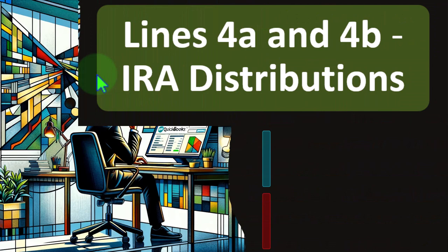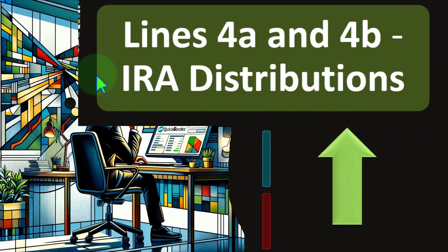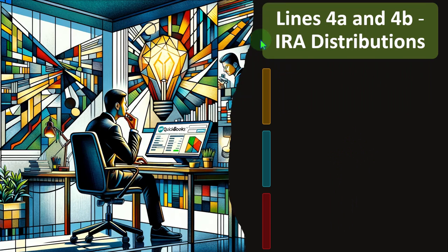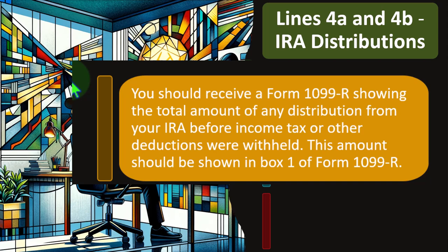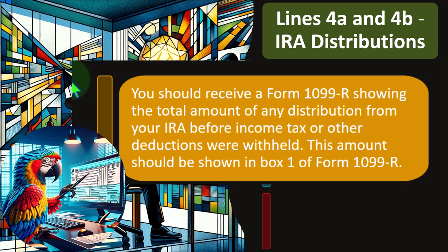So let's look at lines 4A and 4B — IRA distributions, not contributions. We're not talking about putting money into the IRA; we're talking about taking money out, which typically happens at retirement. You should receive a Form 1099-R showing the total amount of any distribution from your IRA before income tax or other deductions were withheld. This amount should be shown in Box 1 of Form 1099-R. That's pretty straightforward — people in retirement are pulling money out of their retirement accounts, and you'll get the 1099-R reflecting that.